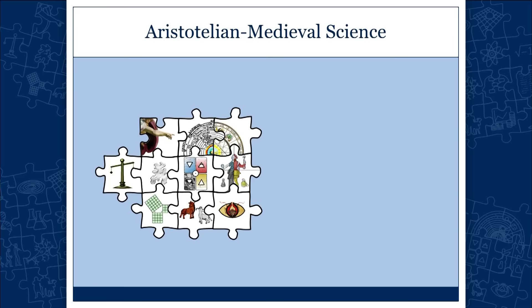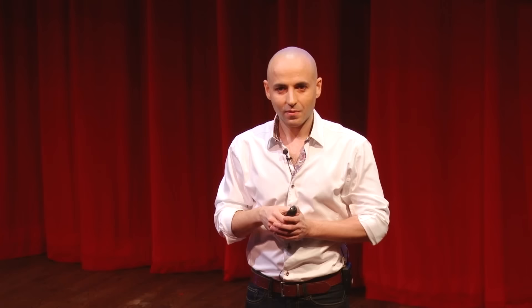This brings us to our conclusion. What I was trying to show you is that the elements of the Aristotelian mosaic are interconnected with one another. The Aristotelian science managed to reach such a level of structural integrity — when all elements are so interconnected and so tightly fit — that we have never been able to replicate it ever since. We have a much more complex science nowadays, but essentially the Aristotelian science reached a level of organization that has not been replicated since.